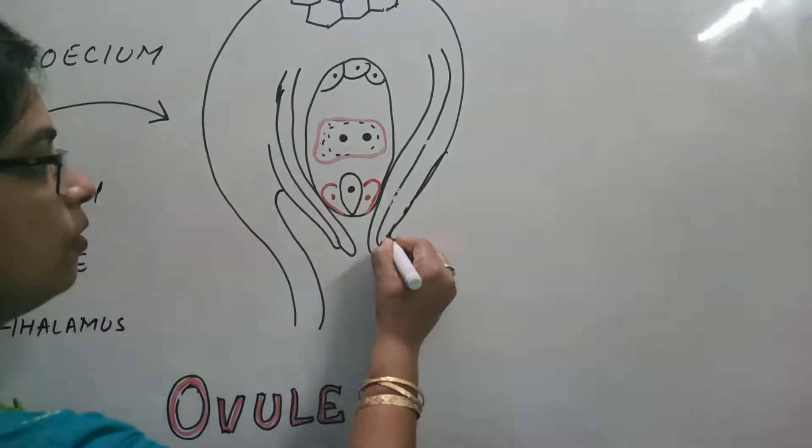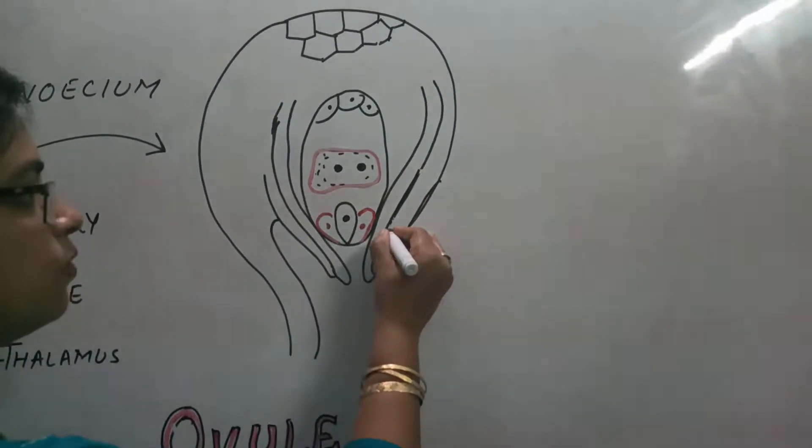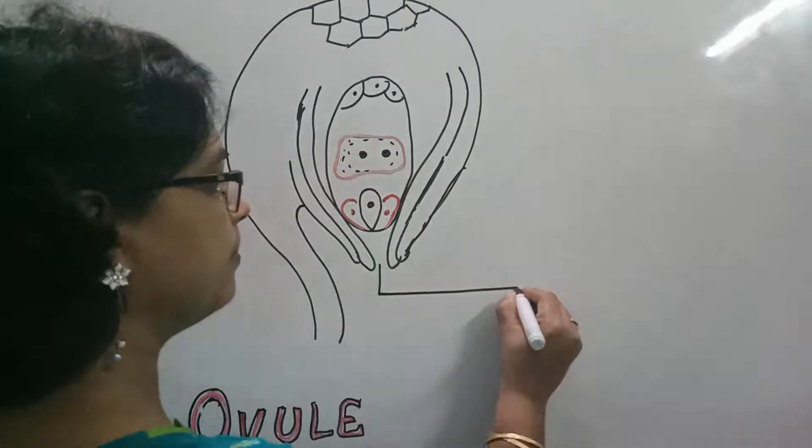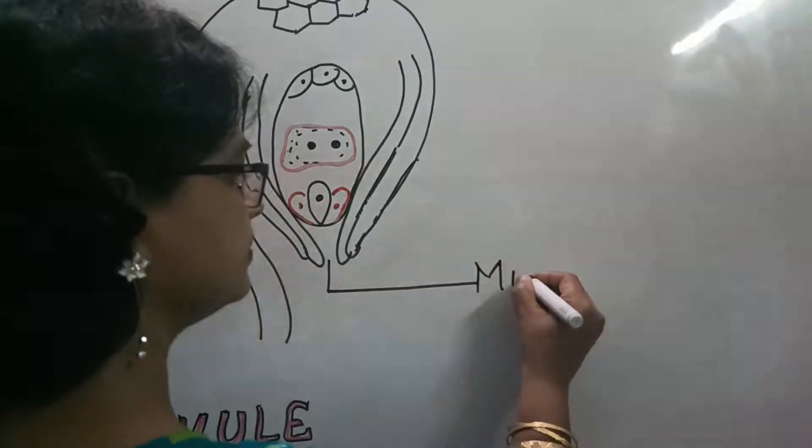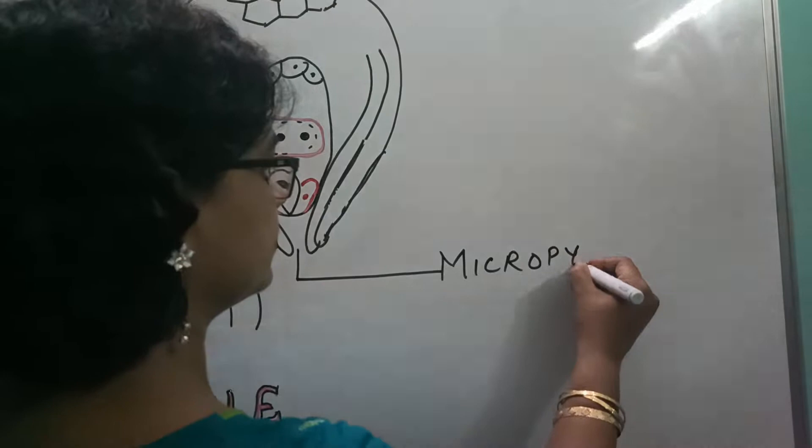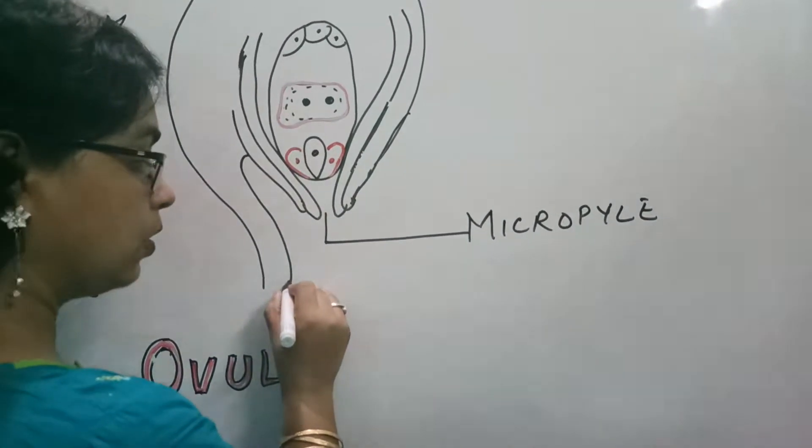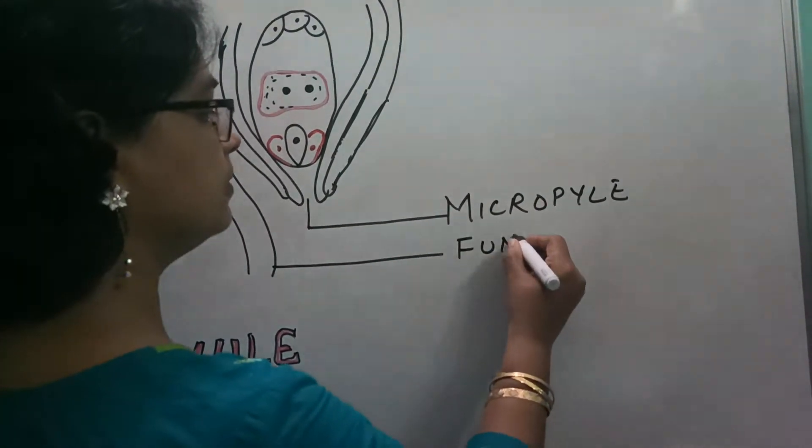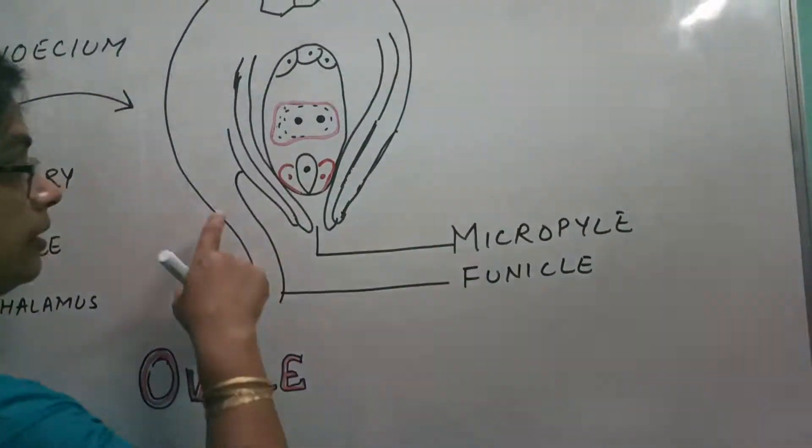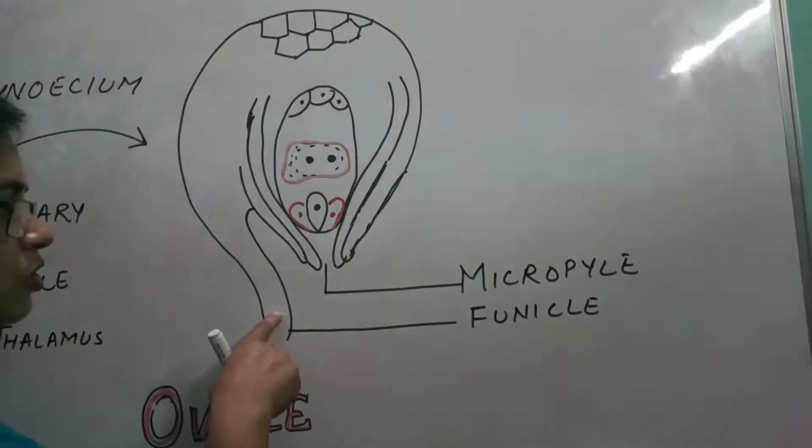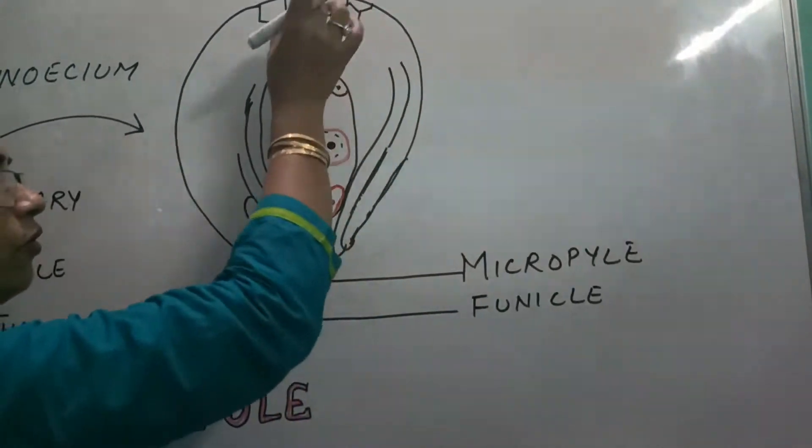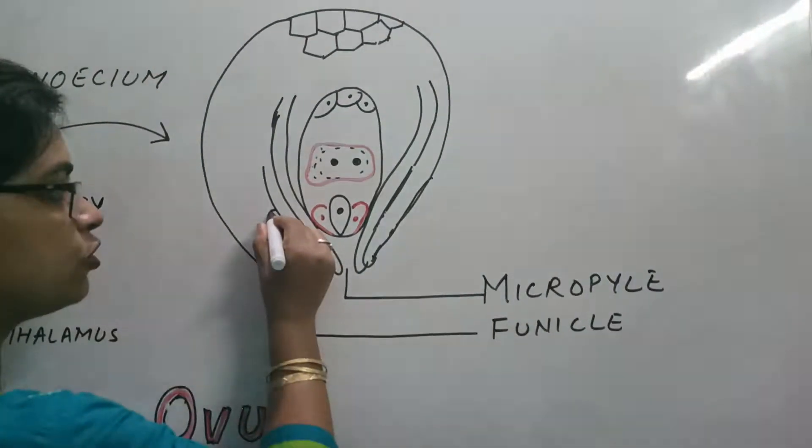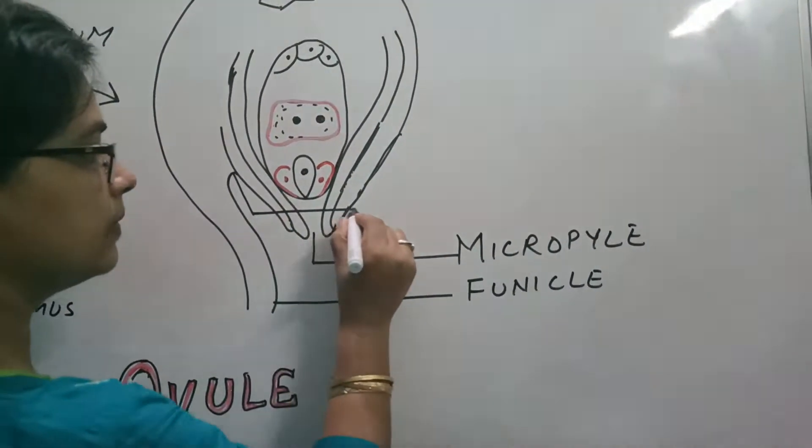Now going to do the labeling of the different parts of this ovule. First of all, this opening is to be termed as micropyle. Then the stalk of this ovule is to be termed as funicle. Then the place from where the stalk is attached with the body, this is the body of the ovule, this one is the stalk portion. And the place where it is attached, it is to be termed as hilum.